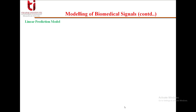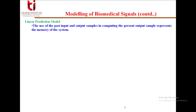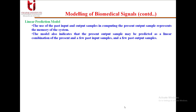Now let's move to the linear prediction model. The use of past input and output samples in computing the present output represents the memory of the system. The model indicates that the present output sample may be predicted as a linear combination of the present and a few past input samples and a few past output samples. For this reason it is also known as the linear prediction or LP model.